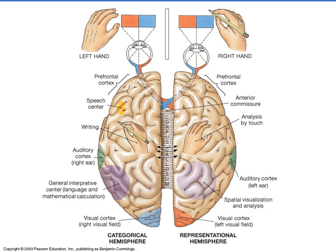It's interesting to look at just some of the specializations of the hemispheres, because some things are better on one side than another. On the right side we're much better at spatial analysis — judging how far away something is — and also analysis by touch, like reaching into a grab bag and identifying an object just by feeling it without looking. The left hemisphere is not so good at that, but the two hemispheres do talk to each other through the corpus callosum, with myelinated axons bringing messages back and forth so each side knows what the other is doing.